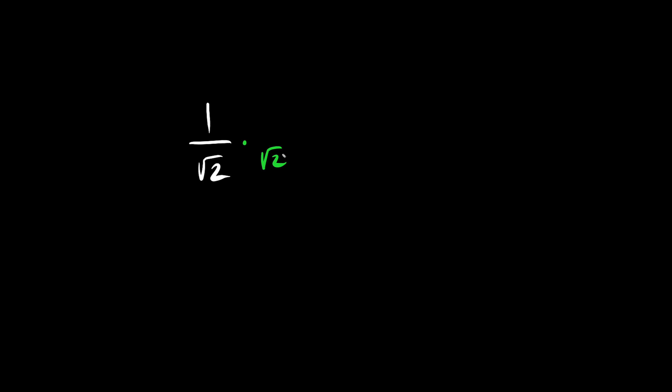Let's rationalize 1 over root 2. We're allowed to multiply top and bottom by root 2 because essentially same over same is 1. We multiply across and we have the answer root 2 over 2.